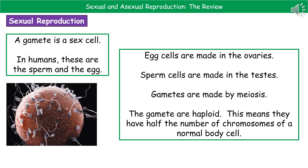Egg cells are made in the ovaries and sperm cells are made in the testes. They are formed through a new process called meiosis. Do not confuse this with mitosis, and be very careful with the spelling — examiners are very picky about how you spell meiosis and mitosis. The key feature of gametes is that they are haploid, meaning they have half the number of chromosomes of a normal body cell. In a human body cell there are 46 chromosomes, but in sperm or egg there are only 23.